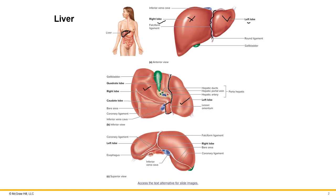On the posterior or dorsal side is a lobe called the caudate lobe, and this four-sided lobe is called the quadrate lobe. To review: number one is the right lobe, number two is the left lobe, number three is the caudate lobe, and number four is the quadrate lobe. The little sac wedged between the right lobe and the quadrate lobe is your gallbladder.